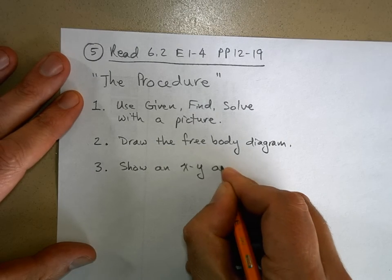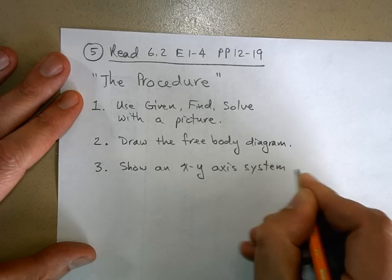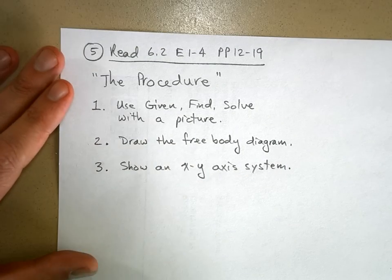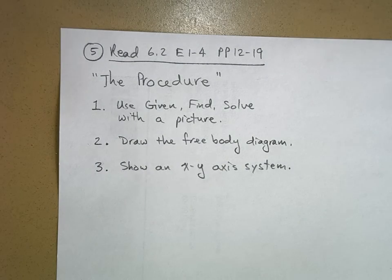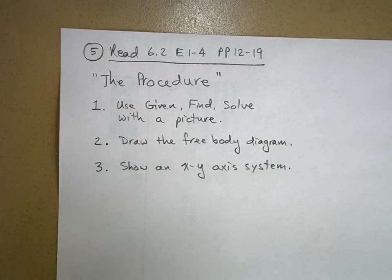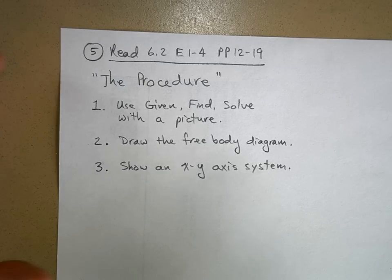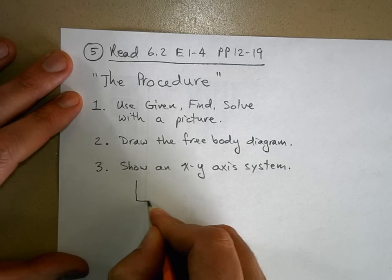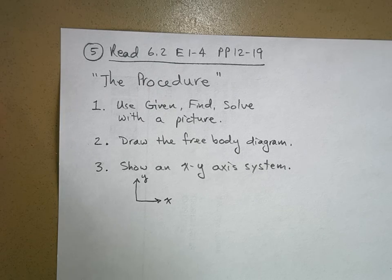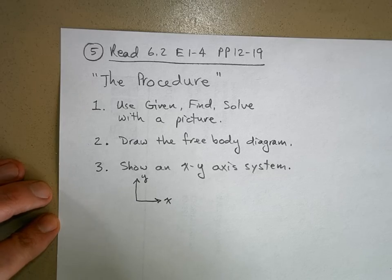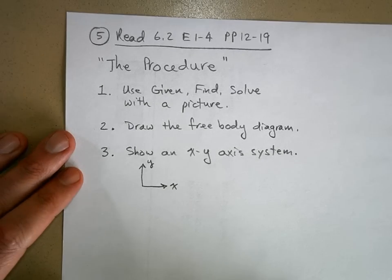Step three: you need to show an XY axis system. For this unit, this step is pretty easy — it's always going to be pretty much the same. When we get to the next unit dealing with forces in two dimensions, inclined planes, or circular motion, it's sometimes handy to change the orientation of the axis system. But for now, x is to the right and y is up. I still want you to get in the habit of doing that.